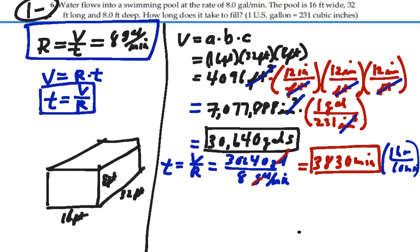then the minutes will cancel out and we'll end up with hours. So divide 3,830 divided by 60 is 63.8 hours. So our answer is 63.8 hours. It will take that much time to fill our swimming pool. Thank you.